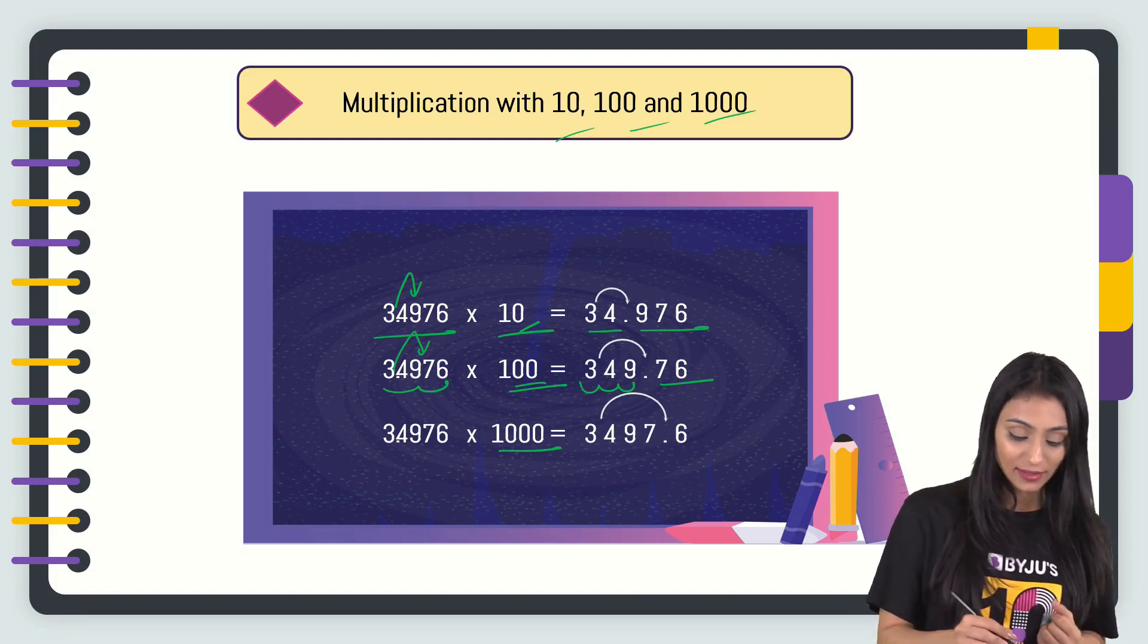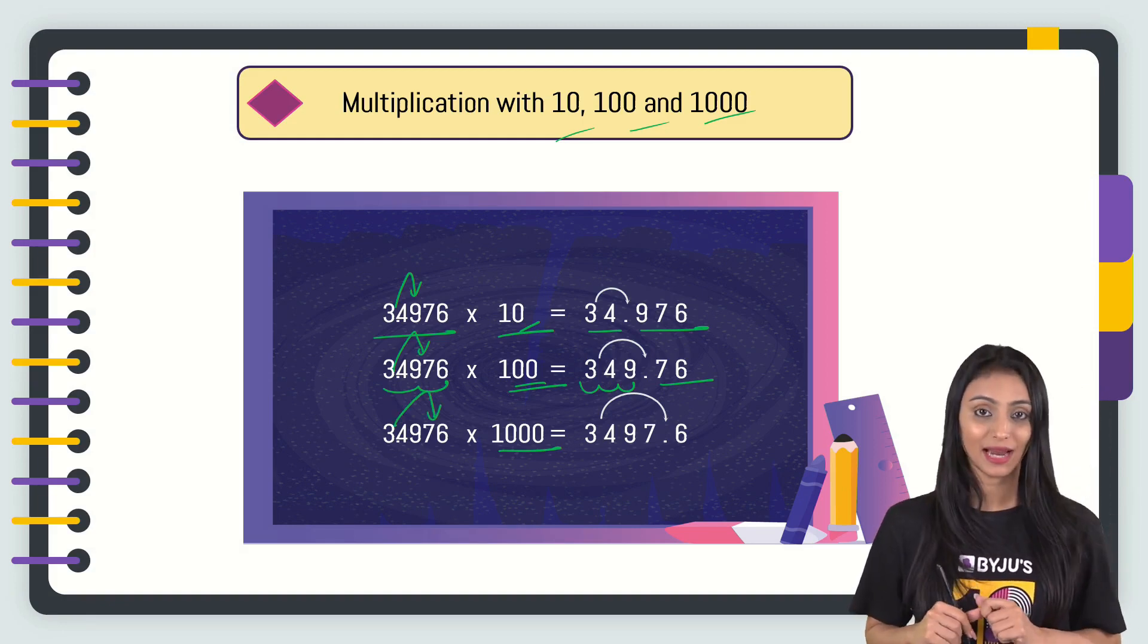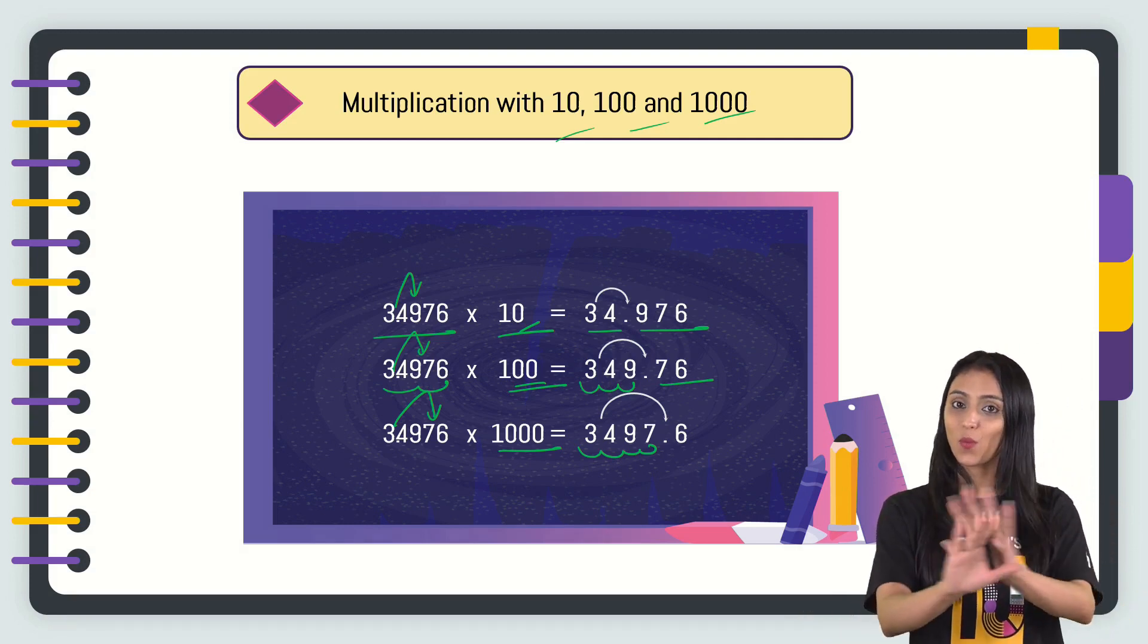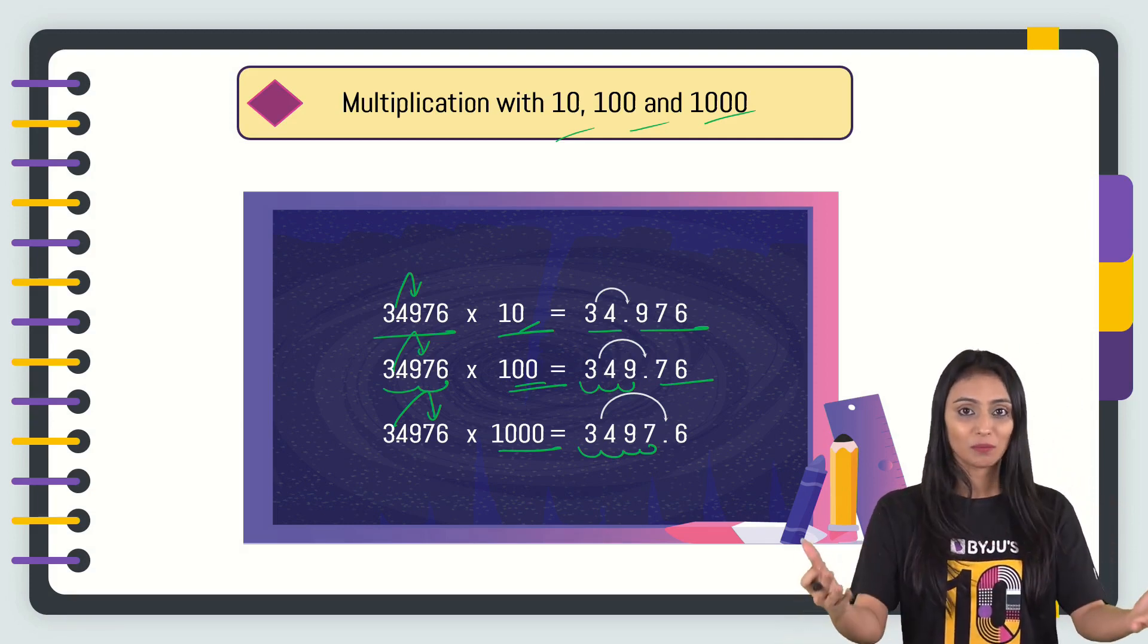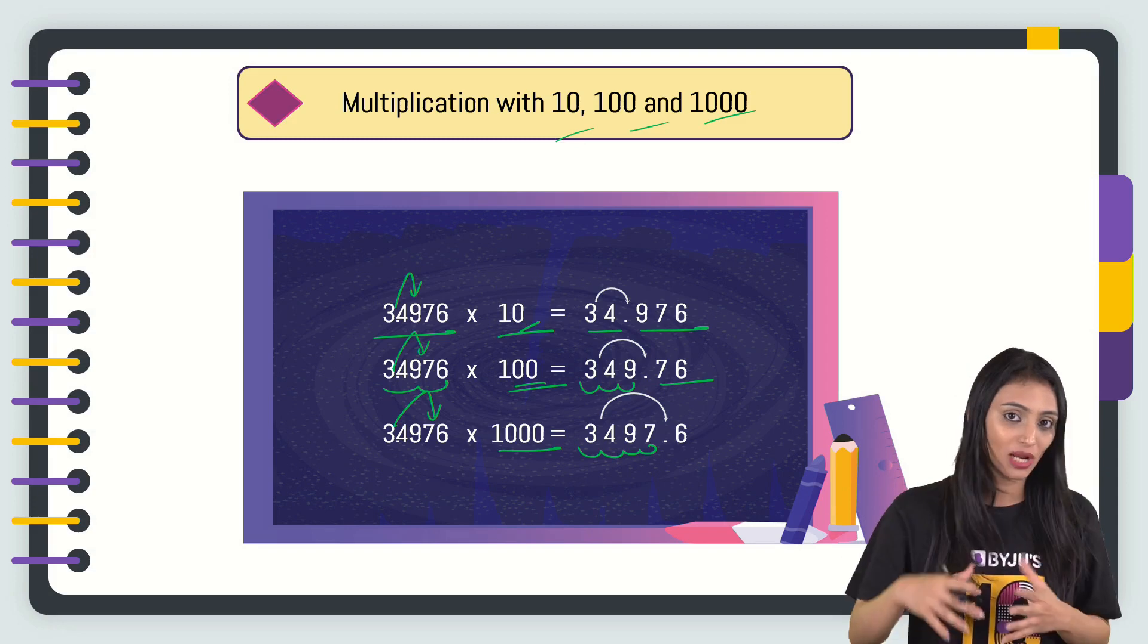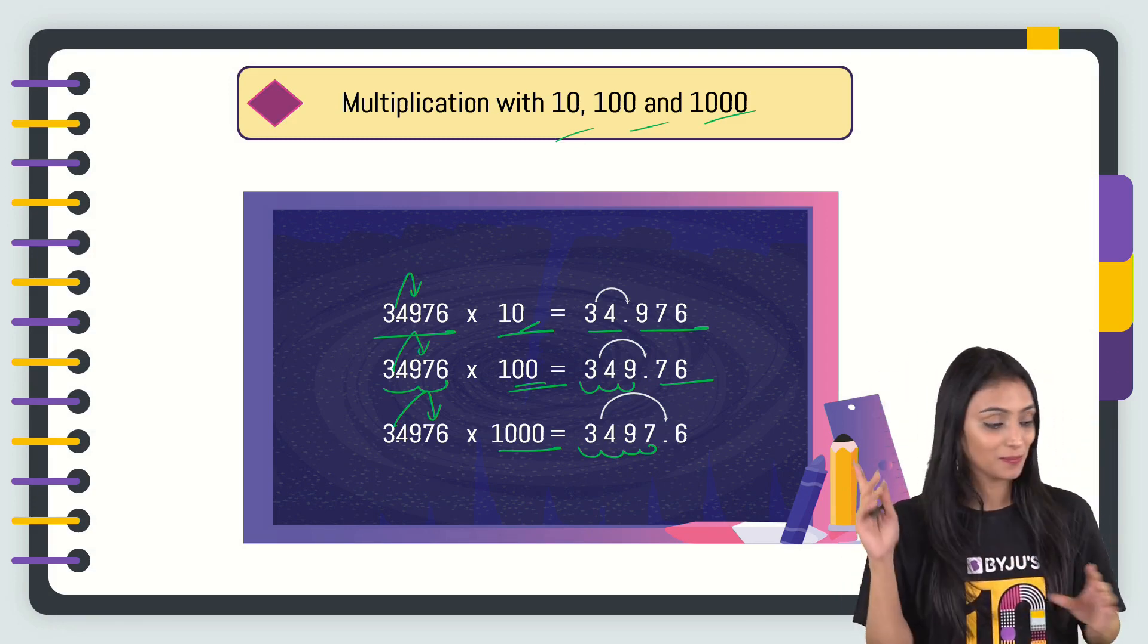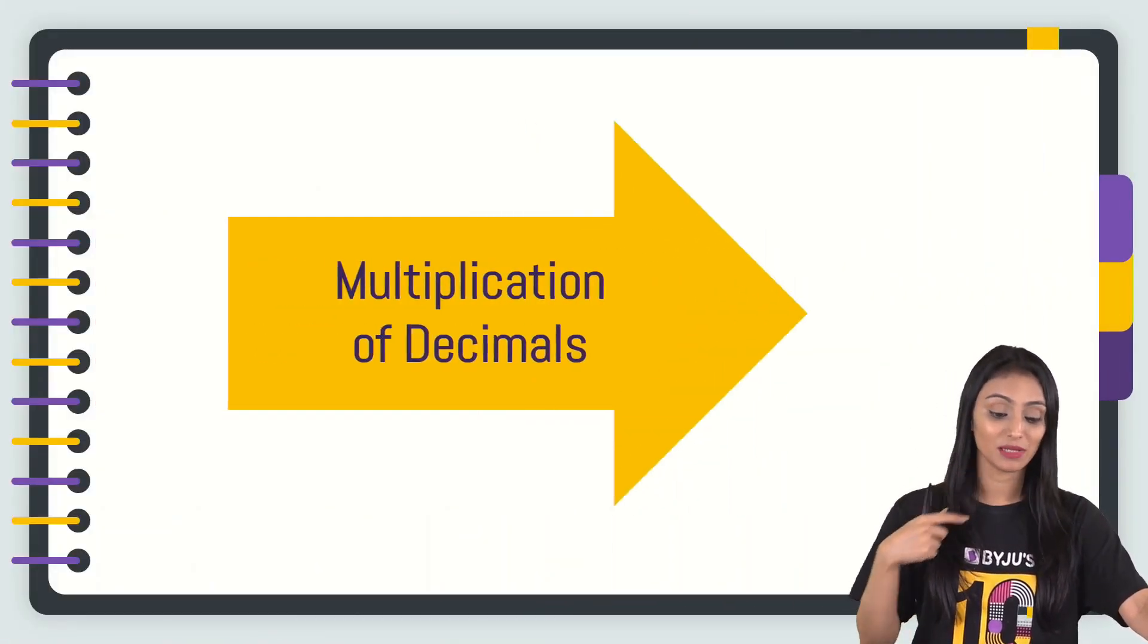Similarly, 1000—three zeros are there. We will shift three places towards the right. That's going to be 3497.6. Very simple one. That's how you can multiply that. No need to do long division—I mean, no need to do the actual method. You can simply shift the decimals. This was about the multiplication of decimals.